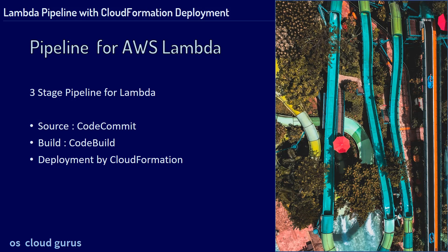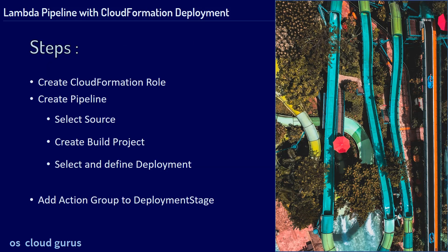Here are the steps we're going to need to create this pipeline. First we're going to create a CloudFormation role. Next we're going to create the pipeline itself — first select the source, then create the build project inside this process and select and define the deployment which is gonna be CloudFormation. Last, after the creation of the pipeline, we're going to add an action group to our deployment stage.